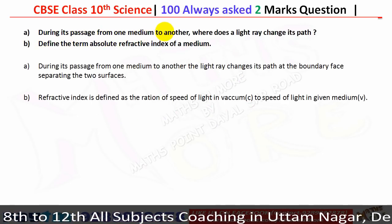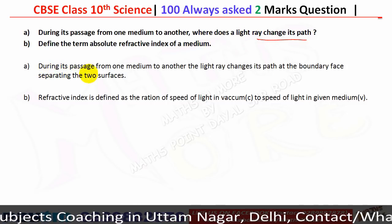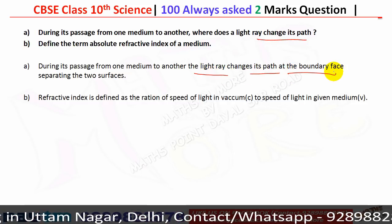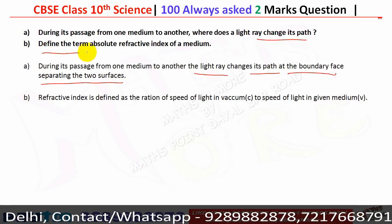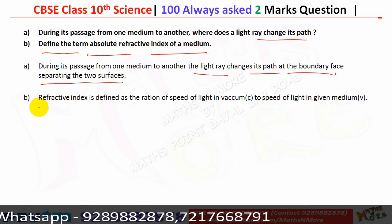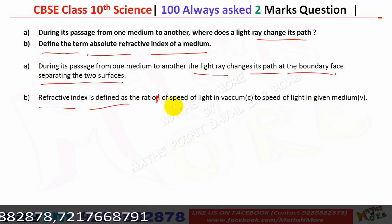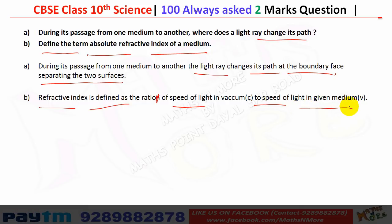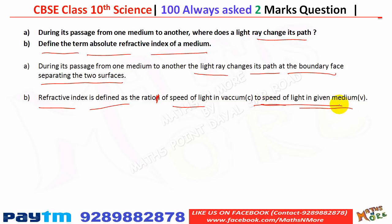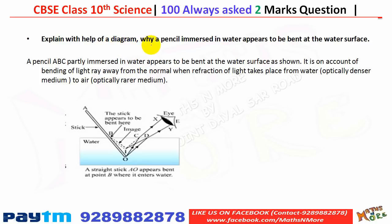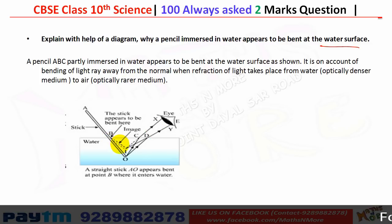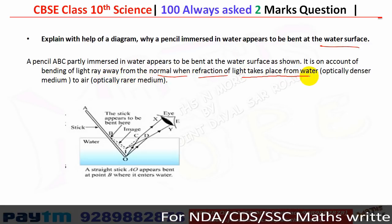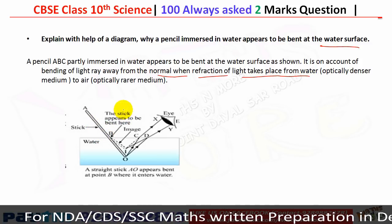During its passage from one medium to another, a light ray changes its path at the boundary face separating the two surfaces. The absolute refractive index of a medium is defined as the ratio of the speed of light in vacuum to the speed of light in the given medium. A pencil immersed in water appears bent at the water surface due to bending of the ray of light away from the normal when refraction takes place — because of the change in optical density from water to air.